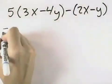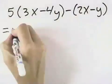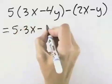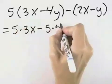In the first set of parentheses, we will multiply through by 5, so we'll have 5 times 3x, and then we have minus 5 times 4y.